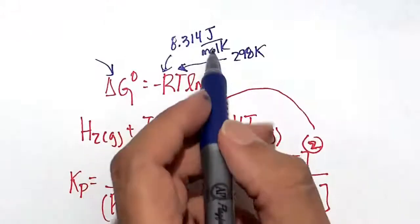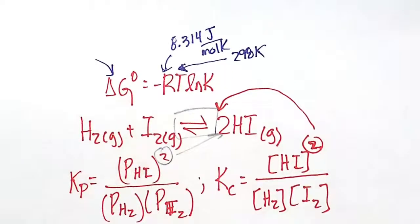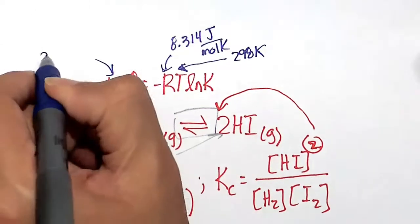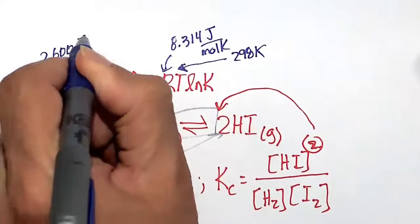They give us this delta G here in the problem as 2.60 kilojoules per mole. Let's go ahead and convert that to joules per mole, because our R is in joules per mole, and that just means multiplying it by 1,000. So multiplying this by 1,000, we get 2,600 joules per mole.